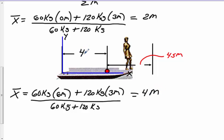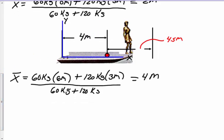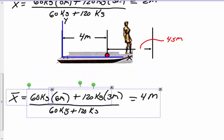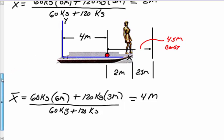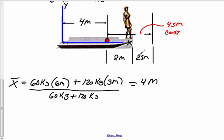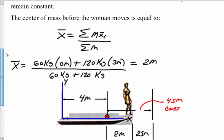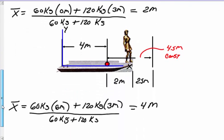So this becomes 4 meters. The raft is 6 meters long, so this distance here is going to be 2 meters. We've held 4.5 meters from the edge of the pier to the center of mass, so that distance from the pier to the front of the raft must be 2.5 meters. Because 2 plus 2.5 gives you the 4.5 — this is constant and will not change.